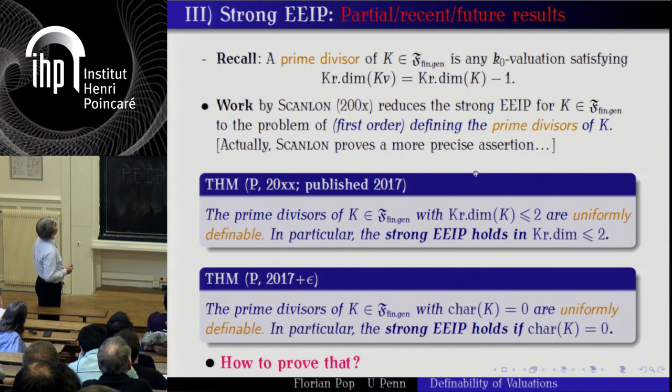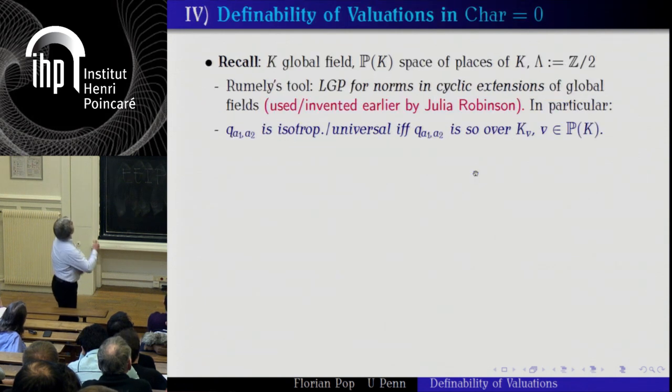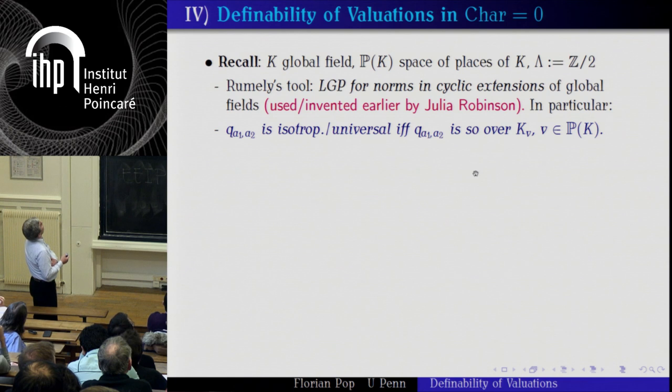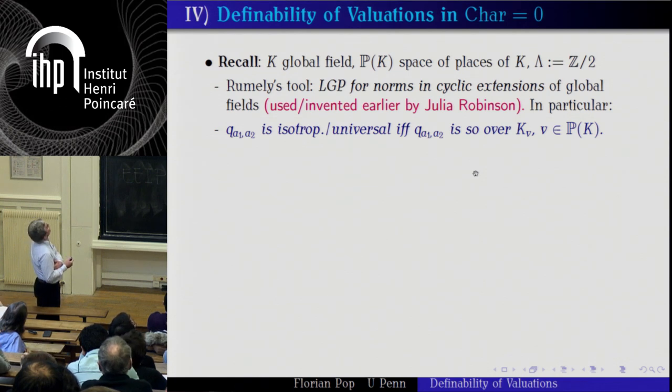And now this is maybe the main content of my talk: the same can be done for all finitely generated fields of characteristic zero — there is no restriction on the Kronecker dimension. On my web page there is a paper I call EEEP2, where the only restriction on the characteristic is that the characteristic cannot be two. And the strongest result so far I can prove is that the strong EEP holds in characteristic zero.